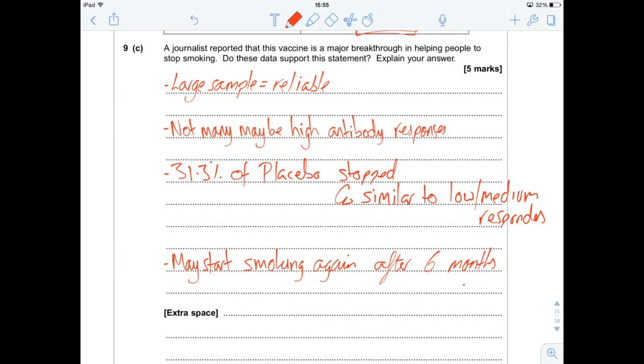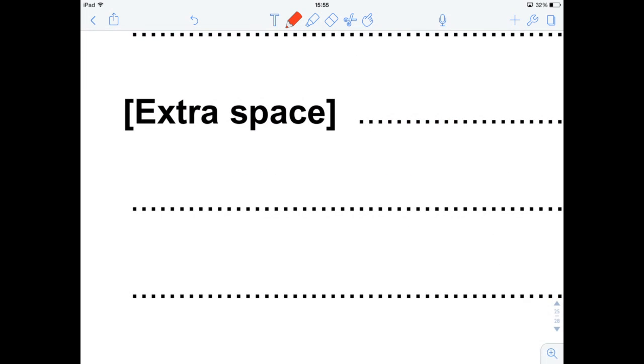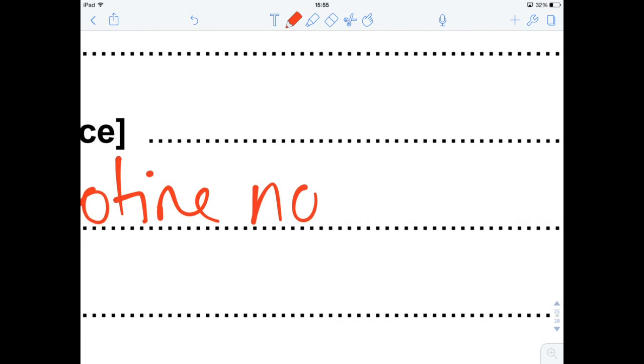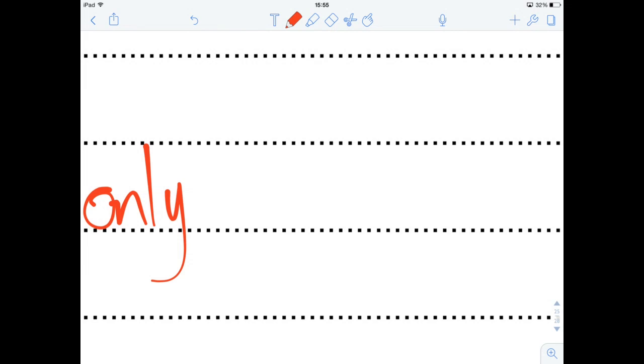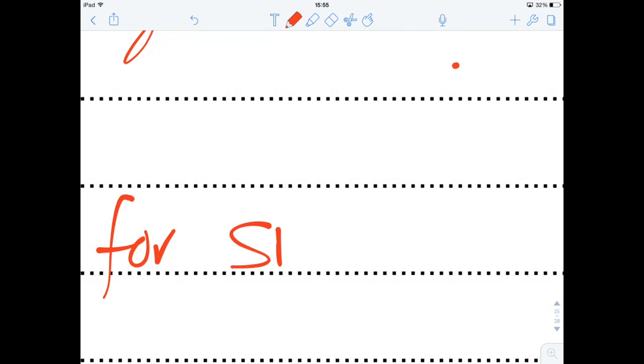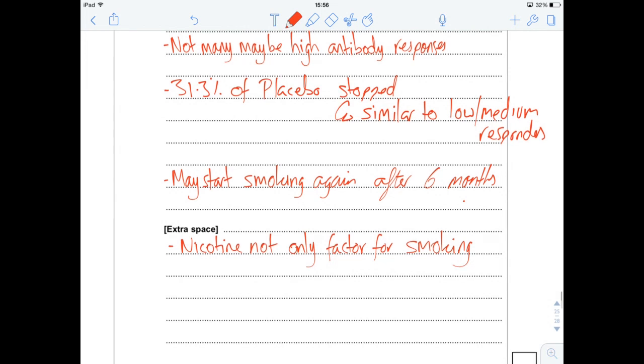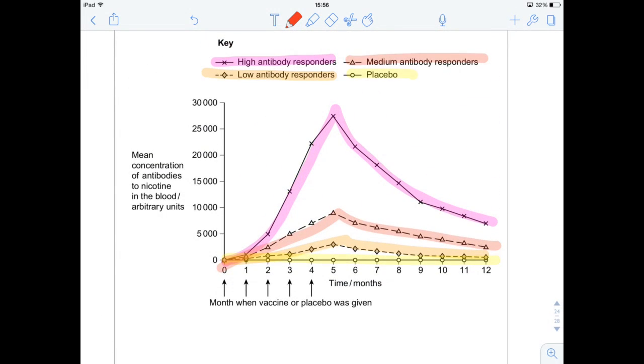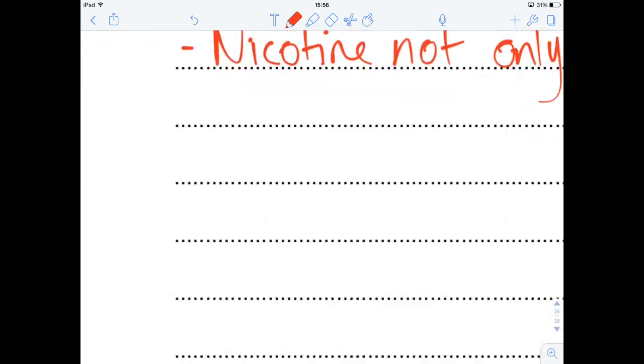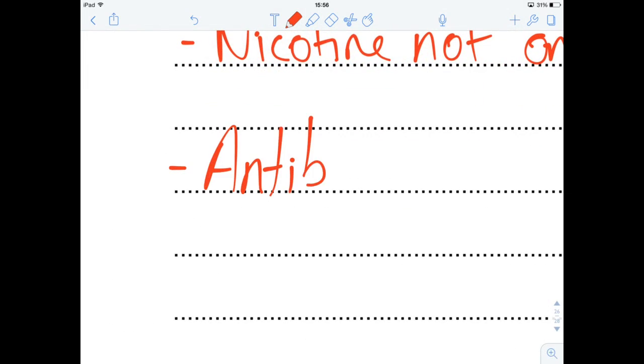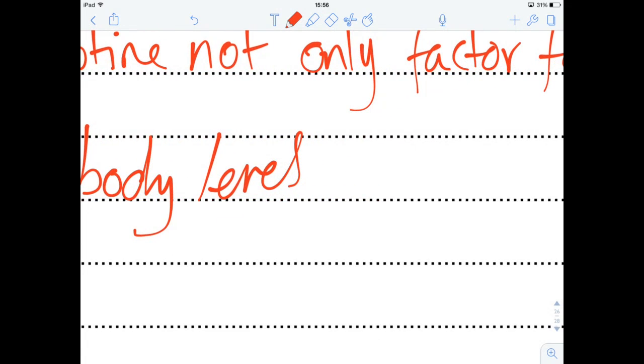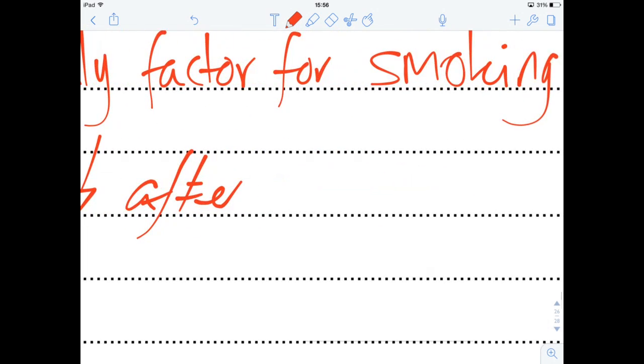Other things, you know, is nicotine the only reason why people smoke? So, there might be something else. Nicotine isn't the only reason for smoking. You might want to appear cool, or you might do it because your friends do it, or you might be a social smoker. There we are. And that is pretty much it. Anything else we can add in? Let's have a little look-see. You could also say the antibody levels drop after five months. So, you might need boosters and things like that. So, antibodies, antibody levels drop after six months. And that will do.